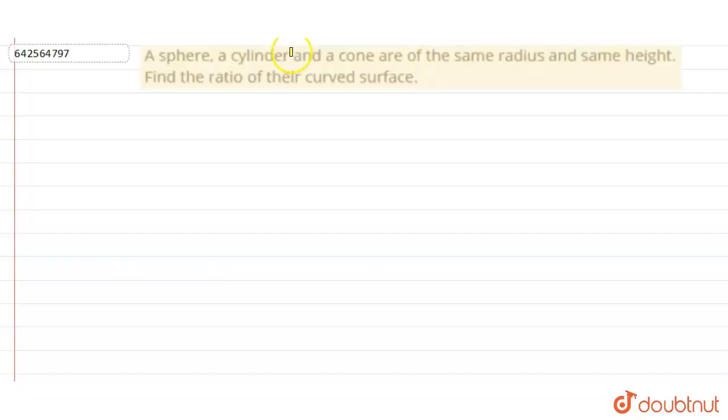A sphere, a cylinder and a cone are of the same radius and same height. Find the ratio of the curved surface. So here what we are given is they have the same radius and same height, right?